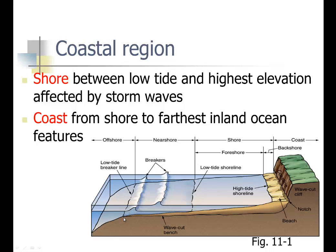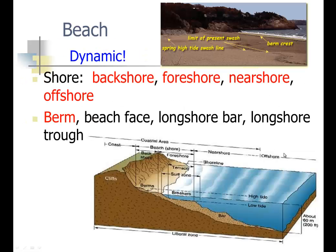Nearshore is where we talk about the wave-cut beach, where the waves normally go down. That's half the wavelength, so if waves are 20 feet apart, that's 10 feet of water, and that's usually where you get the sand deposited. Then we have offshore, going from where the waves cut into the sand all the way out to the open ocean. The berm is the part where waves cut into the sand and give you terraces and surf zones.